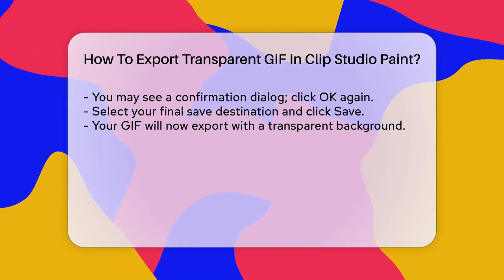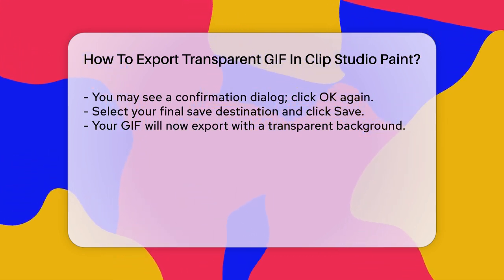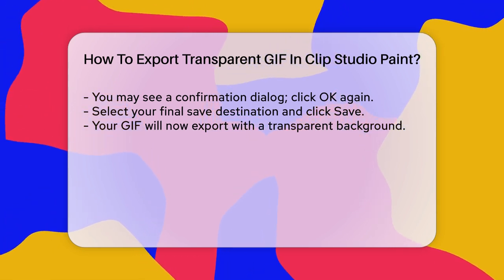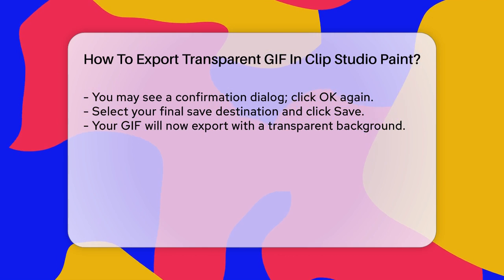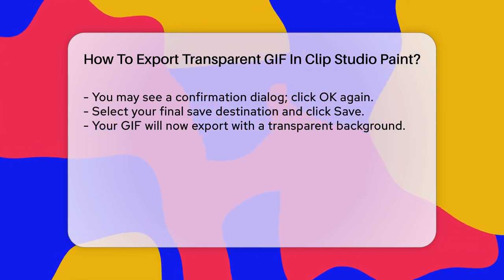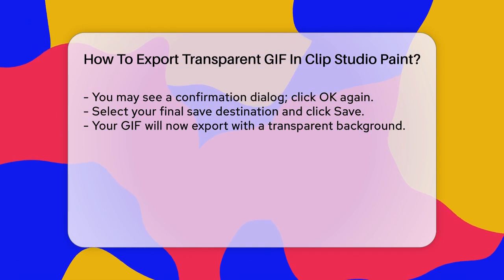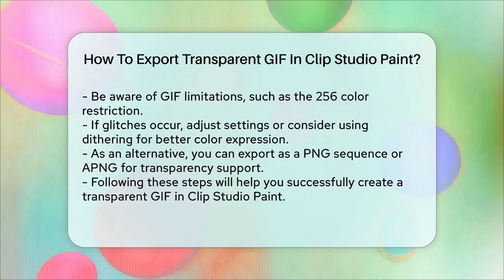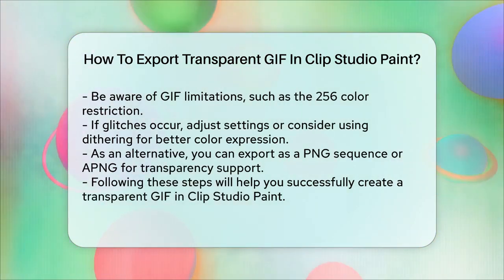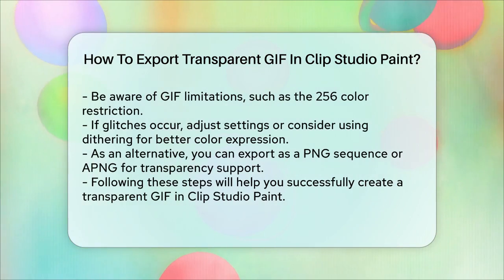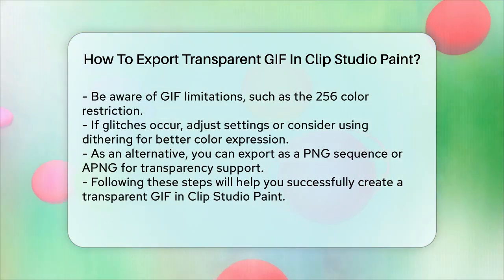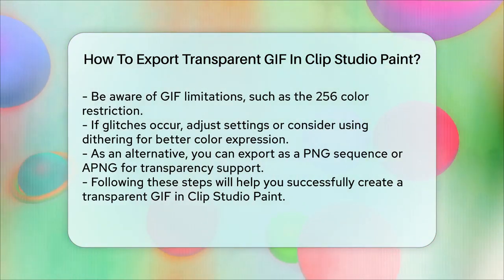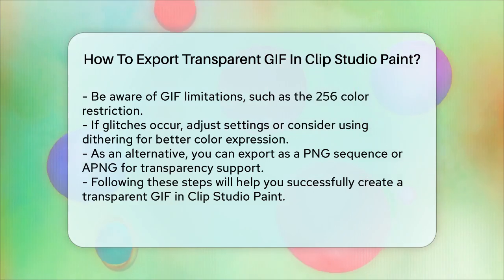Your animated GIF with a transparent background will now be exported. It's worth mentioning that GIF files have some limitations, such as being restricted to 256 colors, including the transparent color. If you encounter any glitches or color patterns in the transparent background, you might need to adjust your settings or consider using Dithering to improve color expression. Another option is to export your animation as a PNG sequence or an APNG (Animated PNG) file, which can also support transparency but may not be as widely compatible as GIFs.